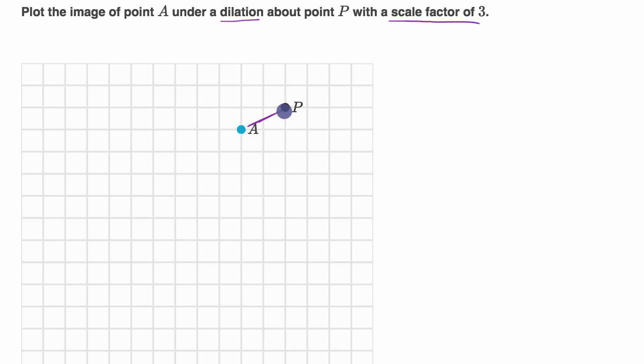Well, one way to think about it is to go from P to A, you have to go one down and two to the left. So minus one and minus two.